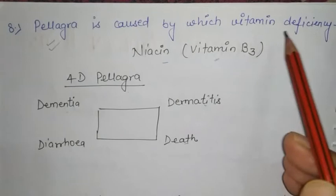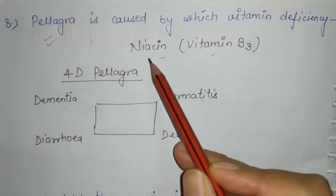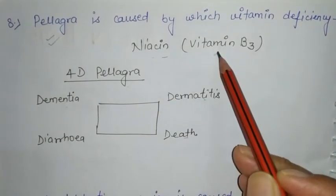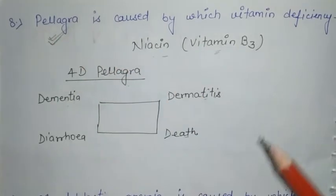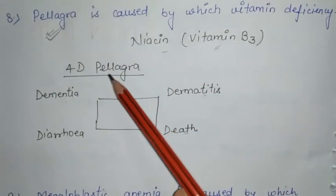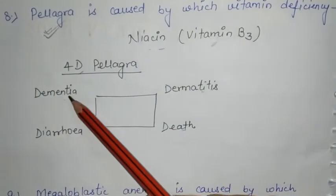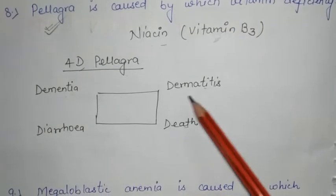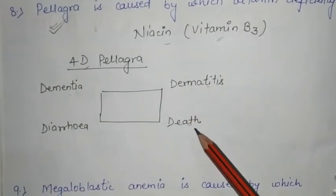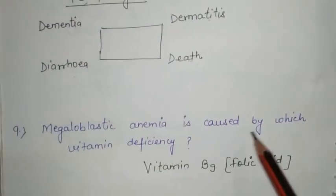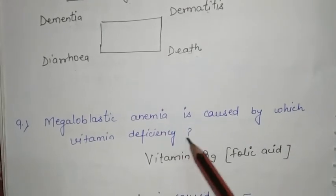Pellagra is caused by which vitamin deficiency? That is niacin, i.e. vitamin B3. This is also a repeated exam question. There are 4 signs of pellagra — the 4 Ds: dementia, dermatitis, diarrhea, and death. Megaloblastic anemia is caused by which vitamin deficiency?